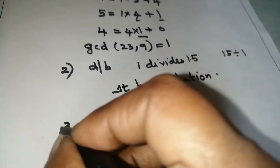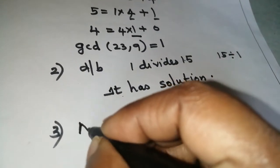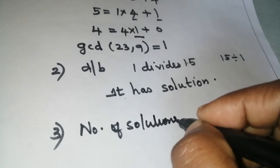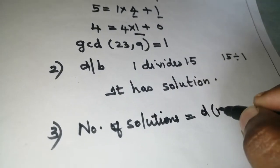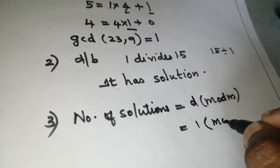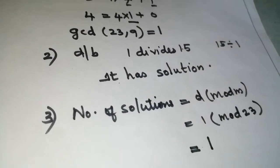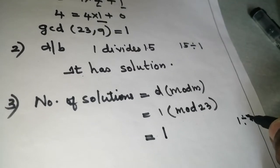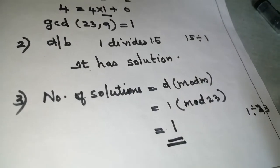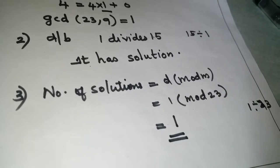Next step: find out the solution. Number of solutions equals D modulo M. That is 1 modulo 23, which gives remainder 1. So one solution exists. Number of solutions equals 1.